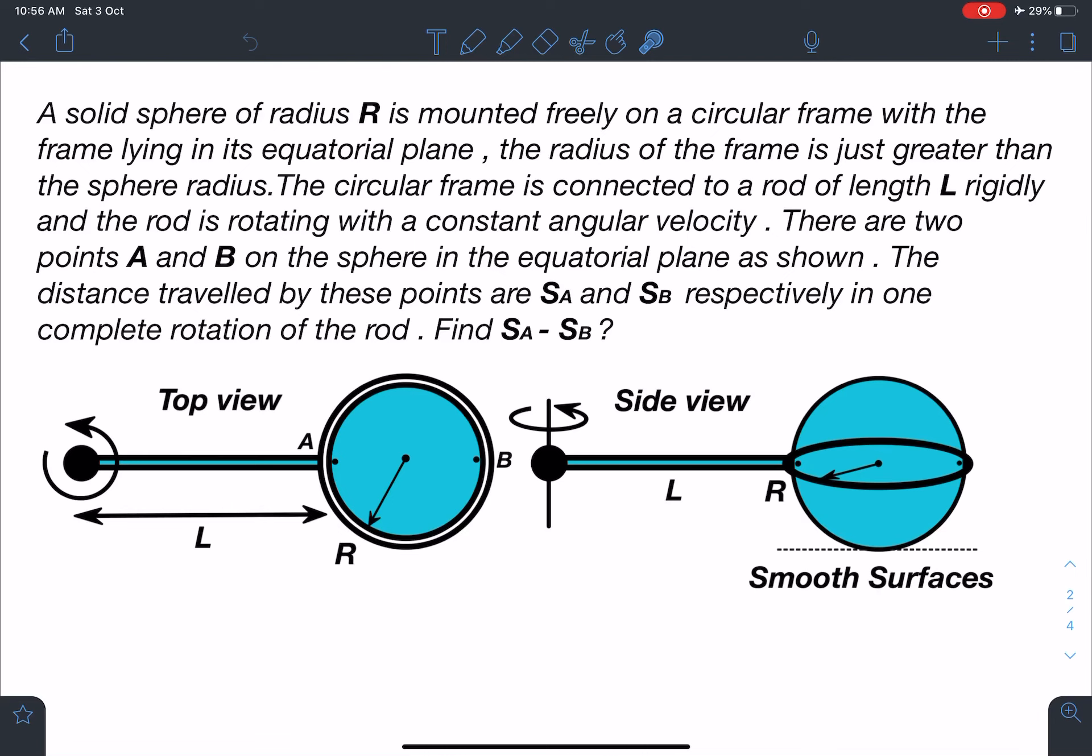The rod is rotating with a constant angular velocity. There are two points A and B on the sphere in the equatorial plane as shown. The distance travelled by these points are SA and SB respectively in one complete rotation of the rod.